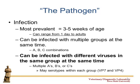The most prevalent infection is three to five weeks of age, but it can range from one day old to adults — there's no age specification. You can be infected with multiple groups at the same time, so you can have A, B, or C all at once. And most interestingly, you can be infected with different viruses within the same group at the same time — two or three A's, or two or three C's simultaneously. So a diagnostic report saying rotavirus A, B, and C doesn't mean three viruses — there could potentially be 12 or 16 specific isolates in that feces.